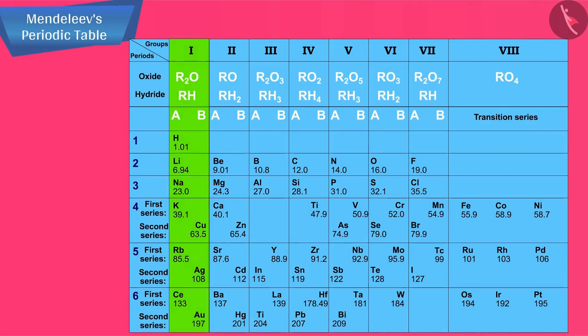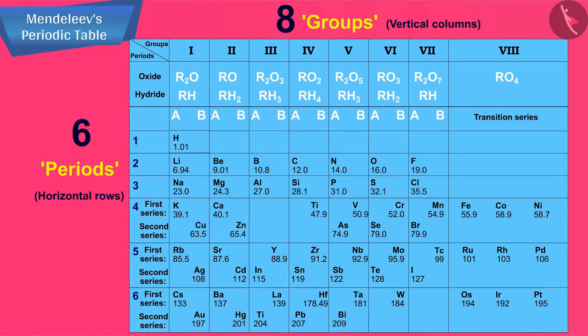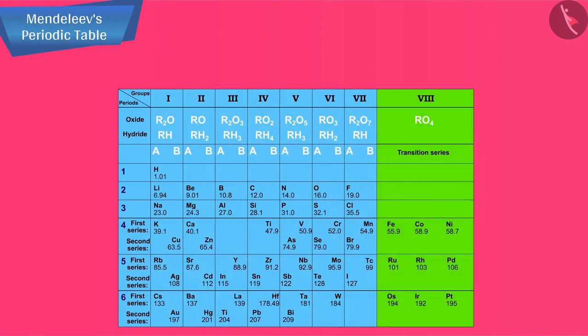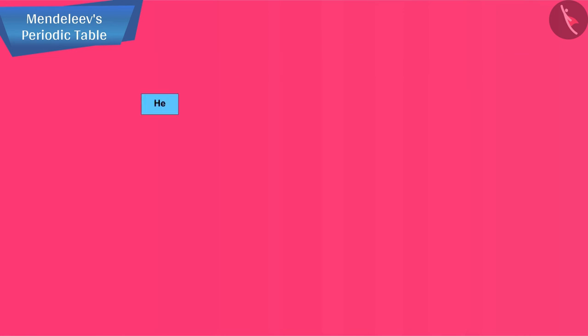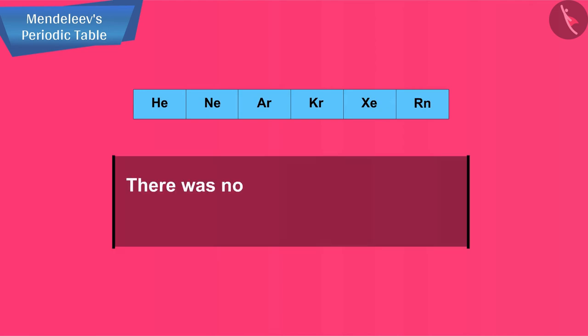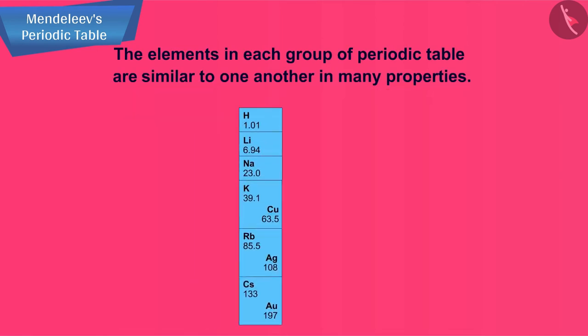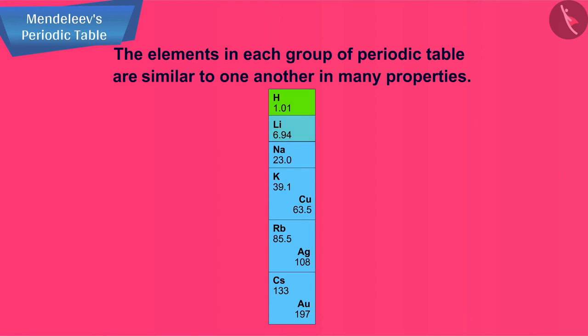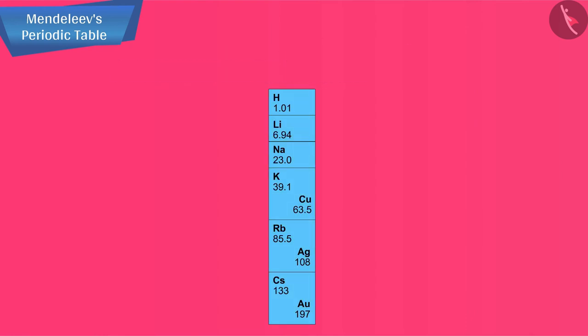Mendeleev's periodic table contains vertical columns called groups and horizontal rows called periods. There were six periods and eight groups in the original periodic table of Mendeleev's. Out of eight groups, first seven groups are of normal elements and eighth group is of transition elements. Noble gases were not known at that time, so there was no group of noble gases in Mendeleev's original periodic table. The elements in each group of periodic table are similar to one another in many properties.